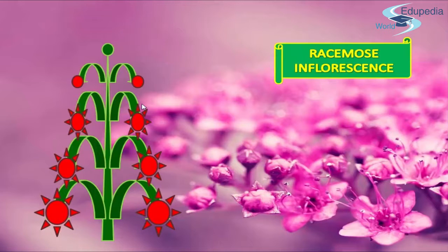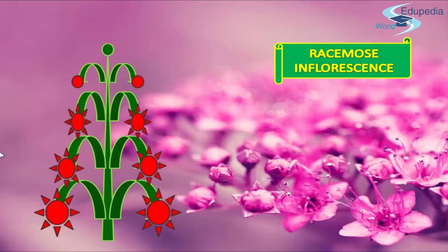In indeterminate inflorescence, the axis continues to grow. In this type, the youngest flowers are present at the top — at the apex of the elongated axis or at the center of a truncated axis. Indeterminate inflorescence may be of many types: racemose, panicle, catkin, spike, corymb, umbel, and spadix.